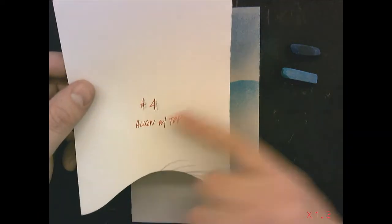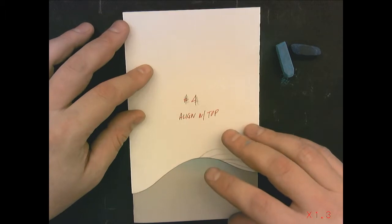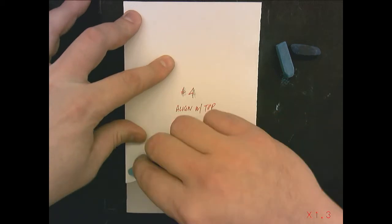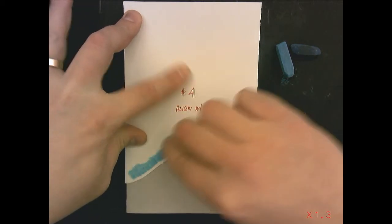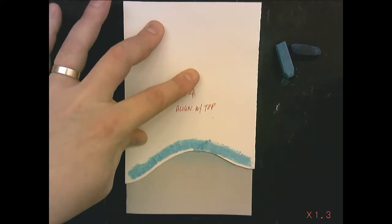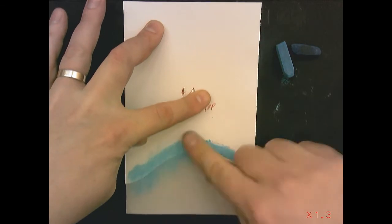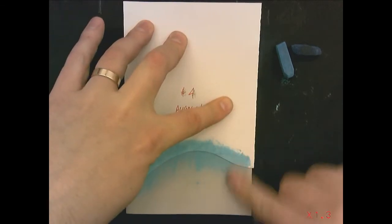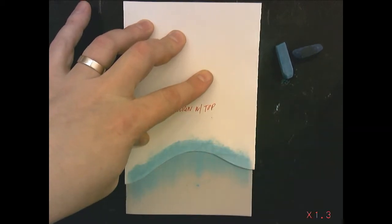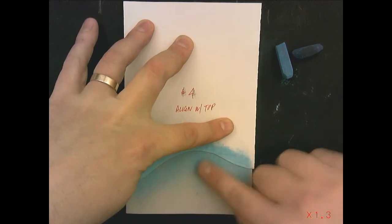Stencil number four. This will be the last of our hill stencils. Again, I'm going to use the lighter blue. If you'd like to use the medium blue, feel free to do so. Put it on really thickly and we're going to go ahead and blend this down.